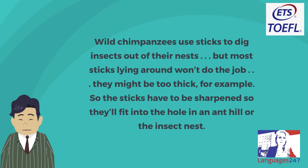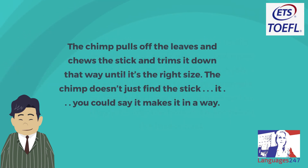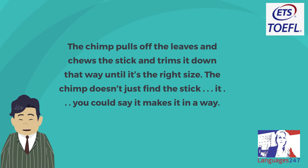'Wild chimpanzees use sticks to dig insects out of their nests, but most sticks lying around won't do the job — they might be too thick, for example. So the sticks have to be sharpened so they'll fit into the hole in an ant hill or insect nest. The chimp pulls off the leaves and chews the stick and trims it down until it's the right size. The chimp doesn't just find the stick — you could say it makes it, in a way.'